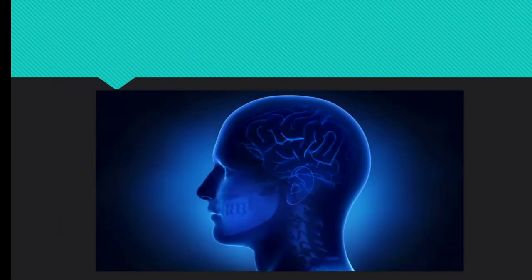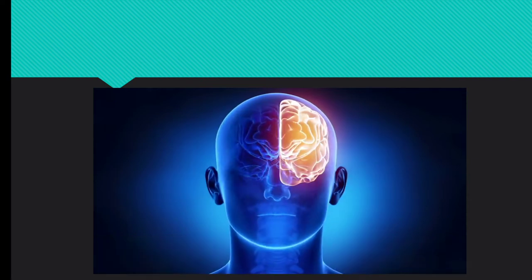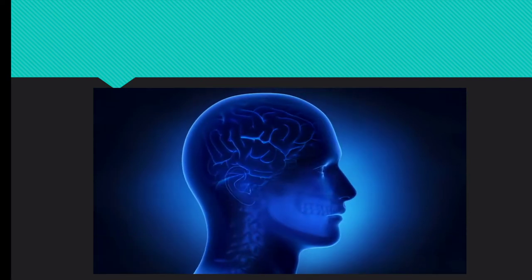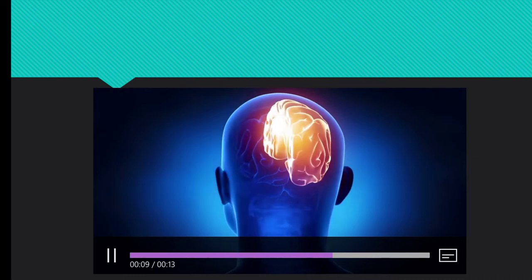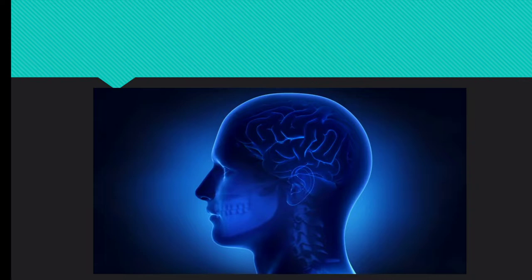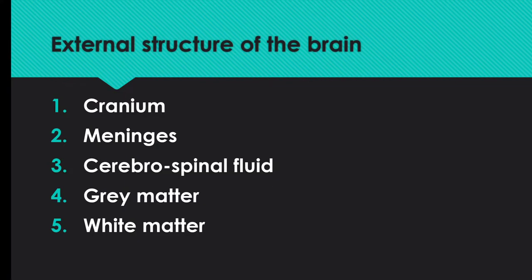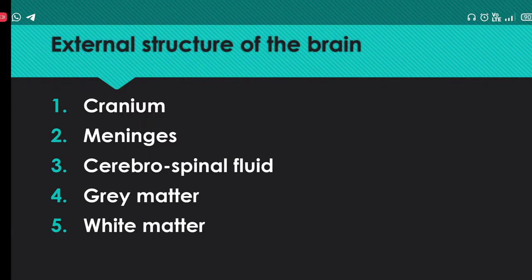The brain is a very delicate and sensitive part which is protected by a skull. Similarly, our heart is also protected by a rib cage. In the skull, the brain is protected by a hard bone structure called the cranium. Within the cranium, our brain is present and is covered by three membranes called meninges.